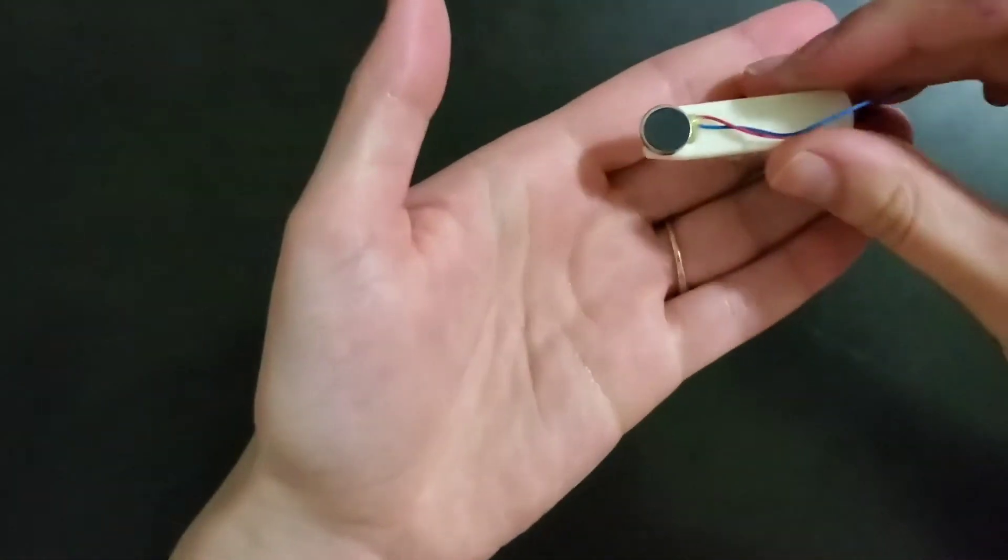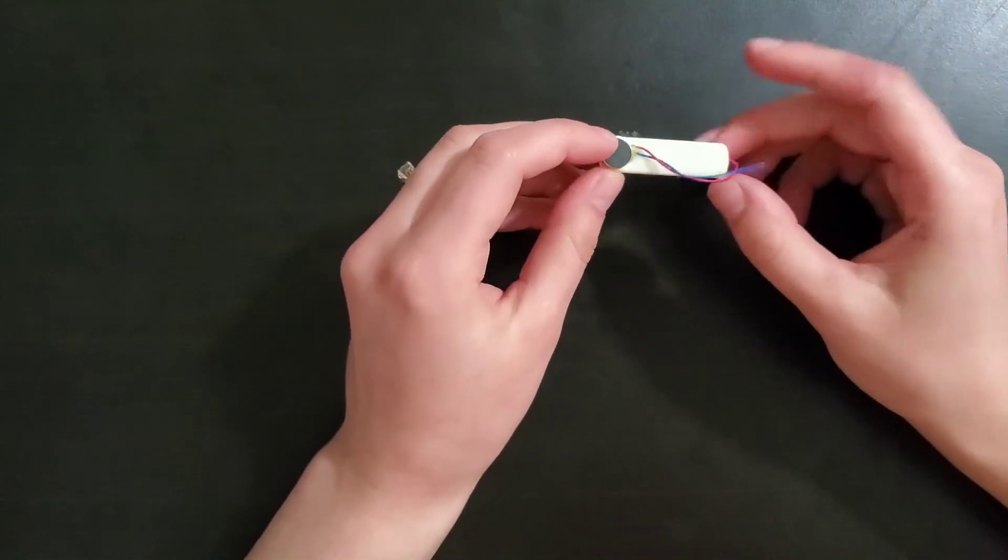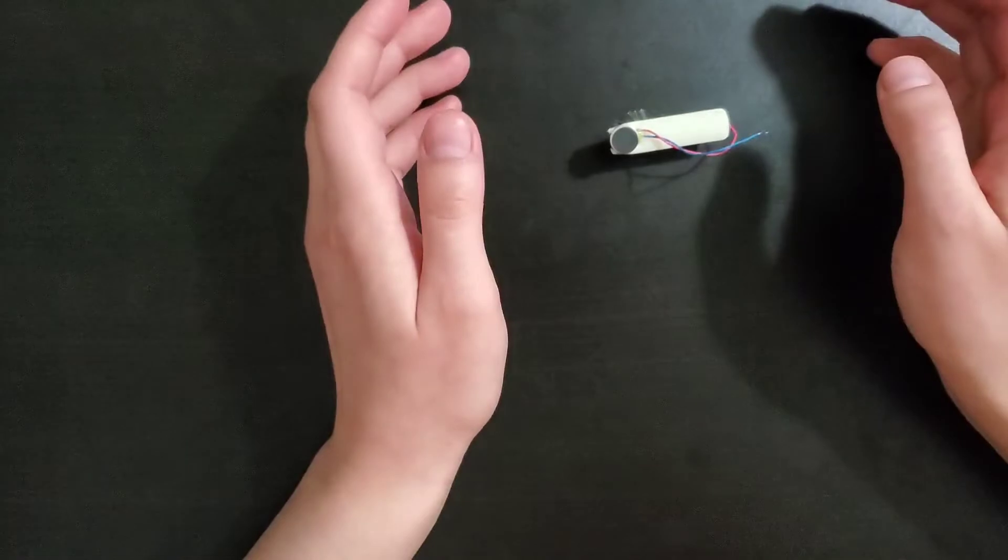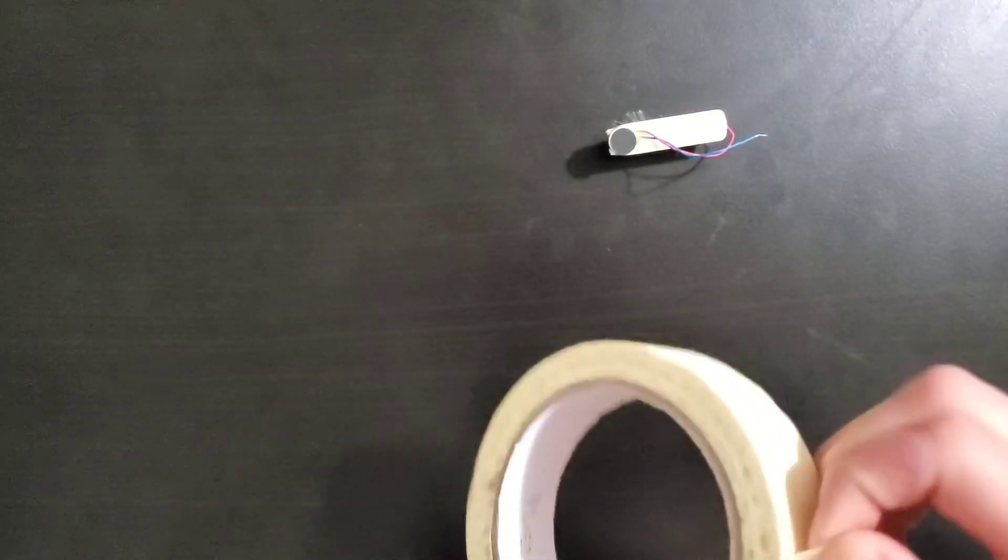So you'll have your motor here and then your toothbrush head and your next step will be to take some tape and fold it on itself.